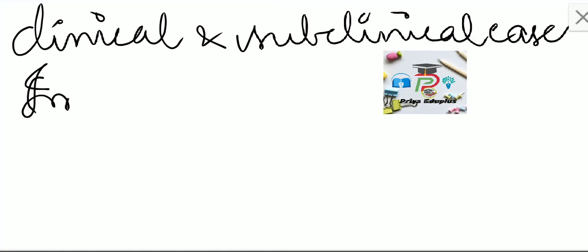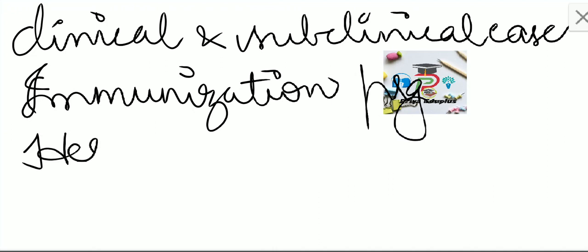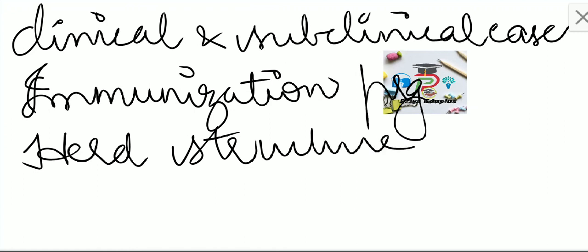The next element is an ongoing immunization program. After that is herd structure — what type of population exists in a particular community, whether there are more older people or more infants and children. That explains the herd structure.